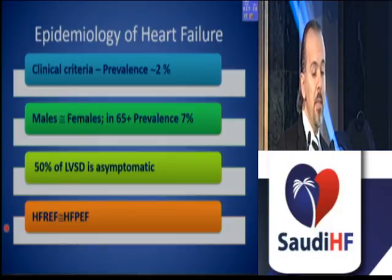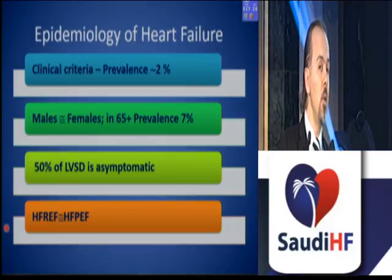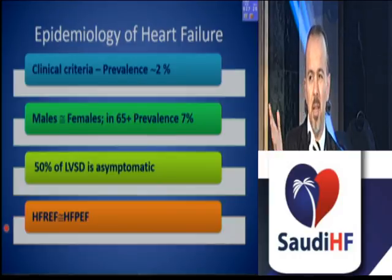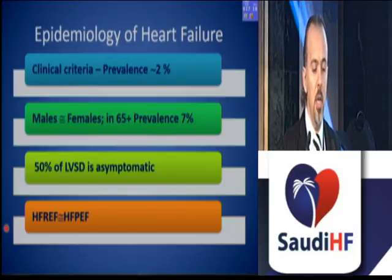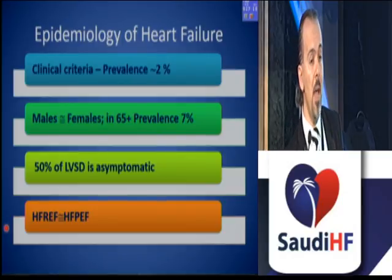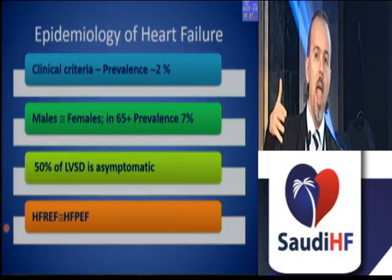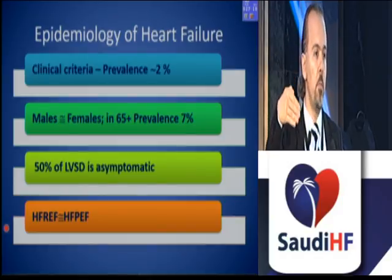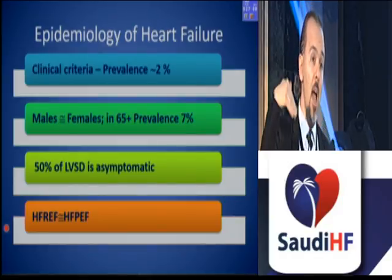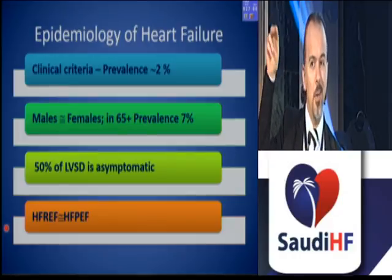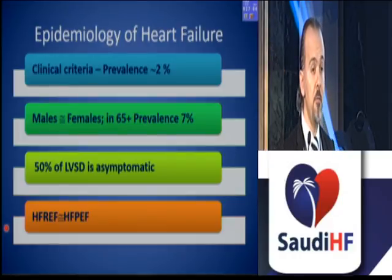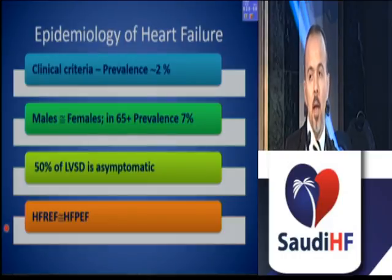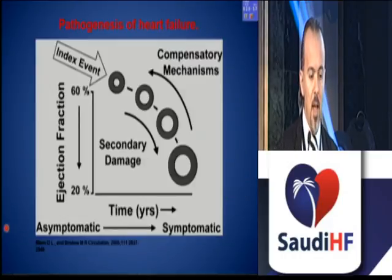When we look at the epidemiology of heart failure, with clinical criteria we end up with a prevalence of 2% in the overall population. Males and females are roughly equal, although HFrEF — heart failure with reduced ejection fraction — is more prevalent in males, and HFpEF — namely diastolic heart failure, heart failure with preserved ejection fraction — is more common in females. Almost 50% is asymptomatic, and HFrEF is approximately equal to HFpEF in prevalence.